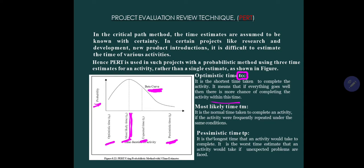Last one is TP, that is pessimistic time. It is the longest time that an activity would take to complete. It is the worst time estimate that an activity would take if unexpected problems are faced. All construction activities may or may not face this, but this time is very useful because in construction there are lots of uncertainties. So this time is useful for construction activities.